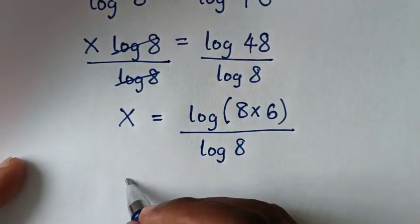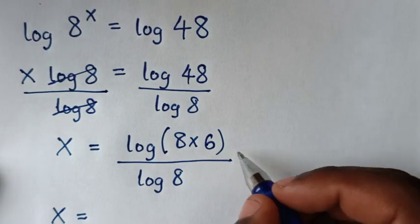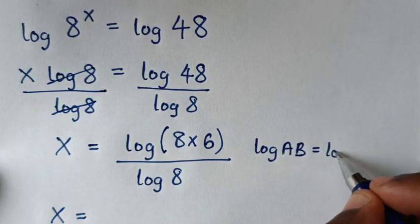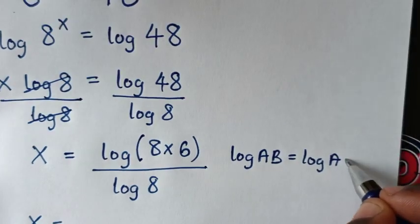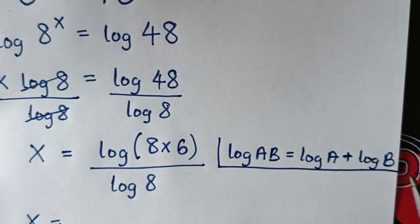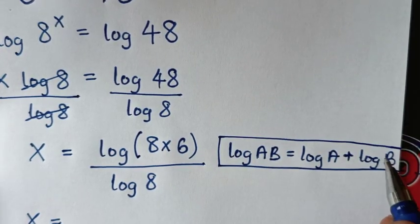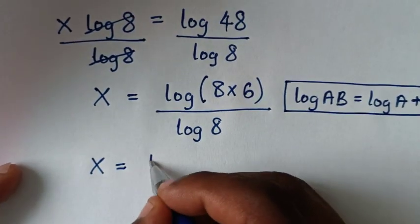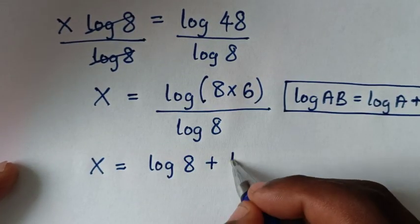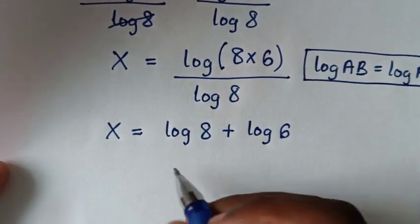In the next step, log of (8 times 6) is in the form of log(a times b), which is equal to log(a) plus log(b). So we apply this rule: log of (8 times 6) becomes log of 8 plus log of 6, all divided by log of 8.